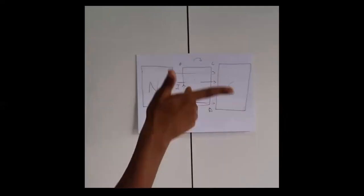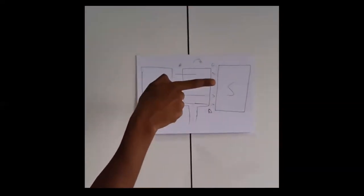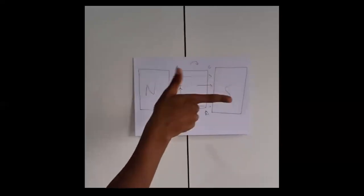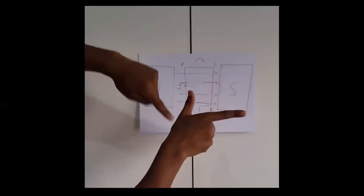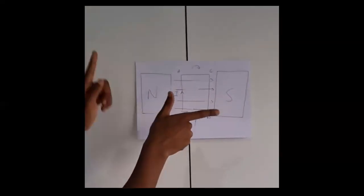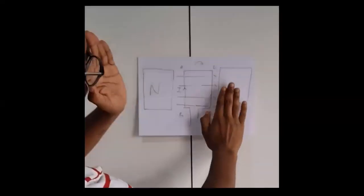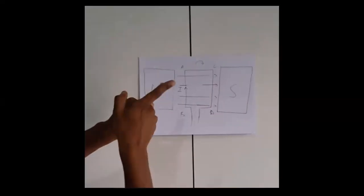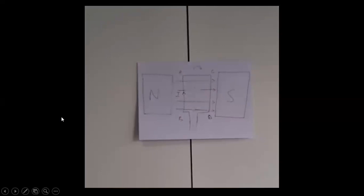With the middle finger pointing into the page and the index finger pointing from north to south, we unfold the thumb — keeping fingers perpendicular — and the thumb points upwards. This means side AB rises up and side CD moves downwards. When AB goes up and CD goes down, the coil rotates clockwise. That's how we determine the direction of rotation using Fleming's right-hand rule.